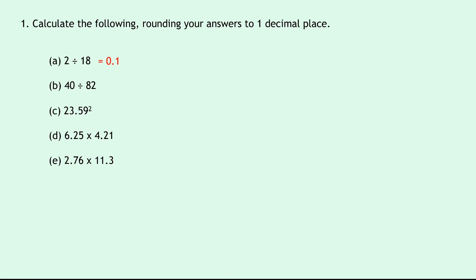Part B says 40 divided by 82. If we do that in our calculator, you'll get 0.4878 and so on. Rounding that to one decimal place, we should get 0.5.